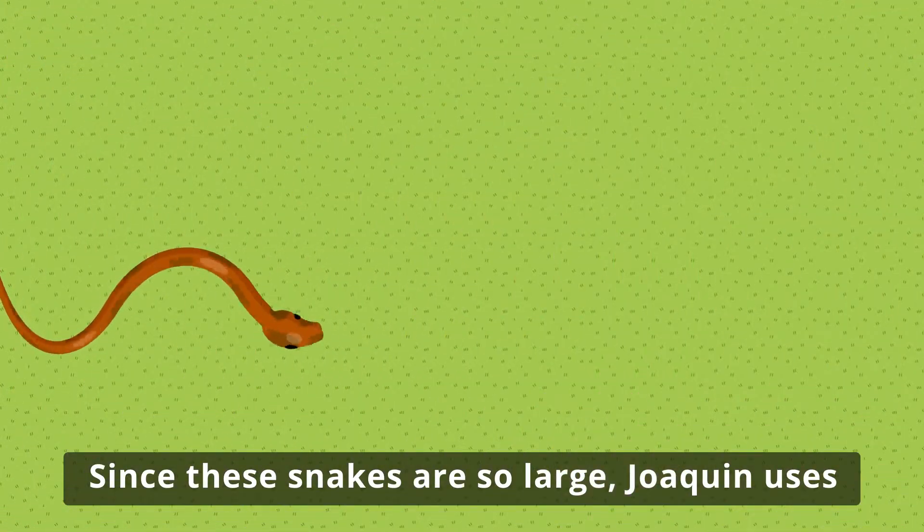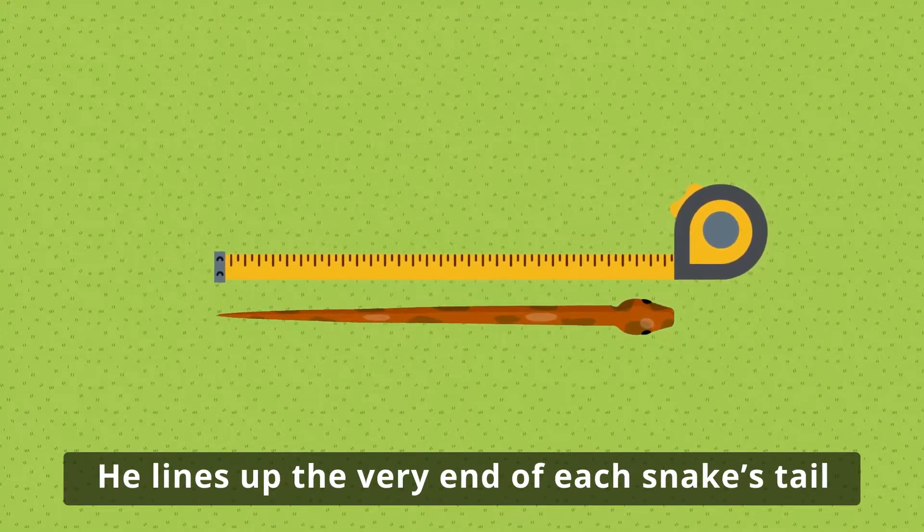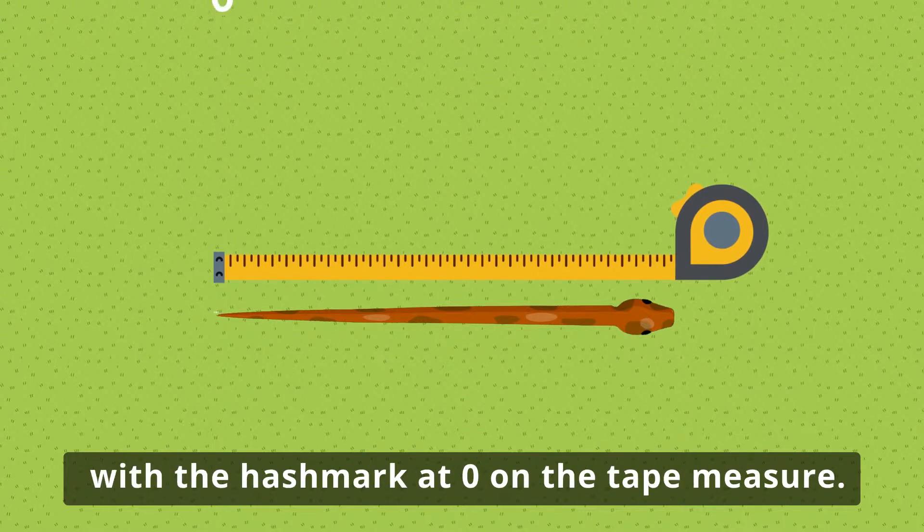Since these snakes are so large, Joaquin uses a tape measure as his measurement tool. He lines up the very end of each snake's tail with the hash mark at zero on the tape measure.